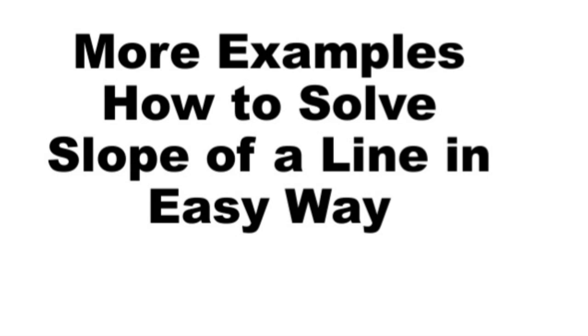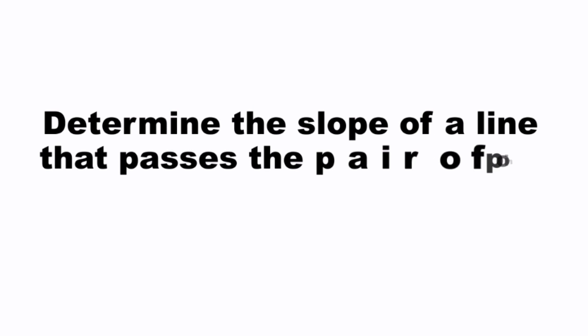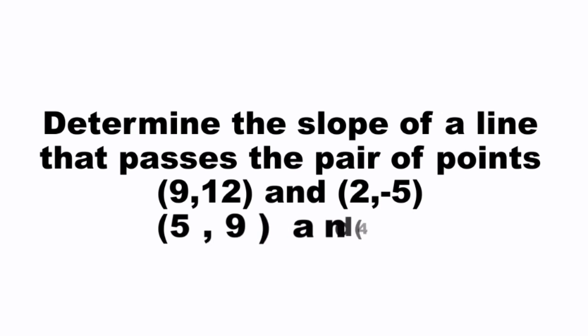More examples on how to solve the slope of a line in an easy way. Example: Determine the slope of a line that passes through the pair of points (9, 12) and (2, -5), then (5, 9) and (4, -12).